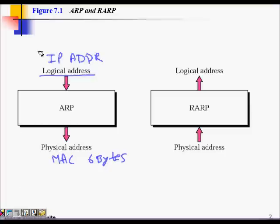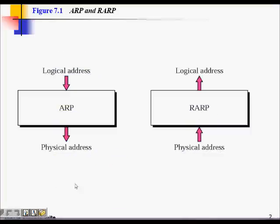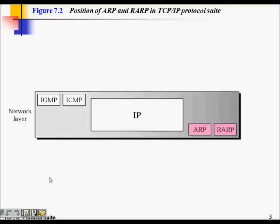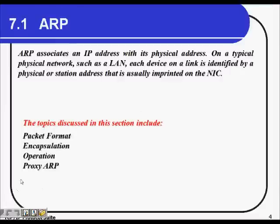ARP and Reverse ARP help make a relationship between these two addresses. If I know the IP address of one machine and want to know its physical address, I will use ARP. When I know the physical address and want to find the IP address, I will use Reverse ARP. Both ARP and Reverse ARP are network layer protocols.